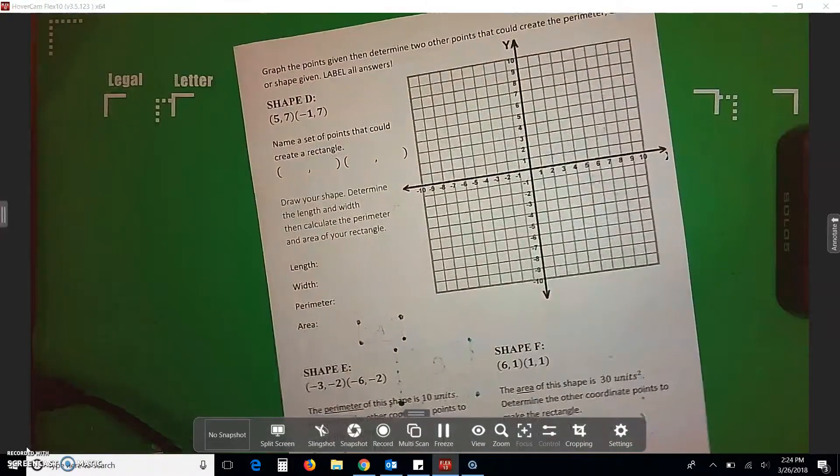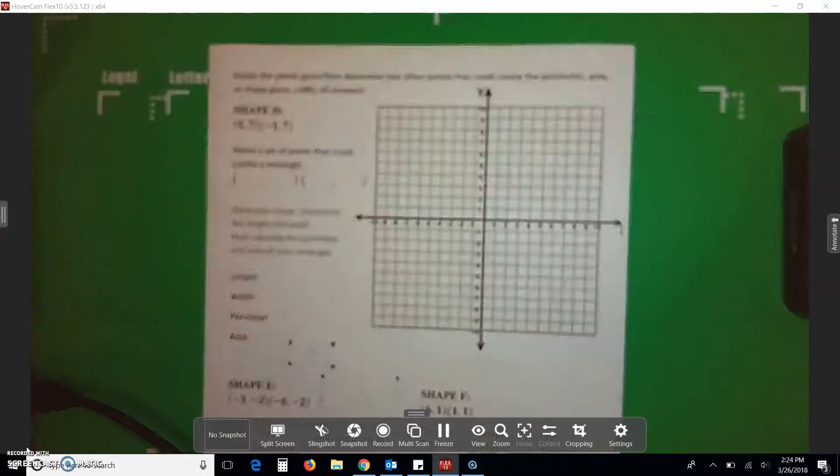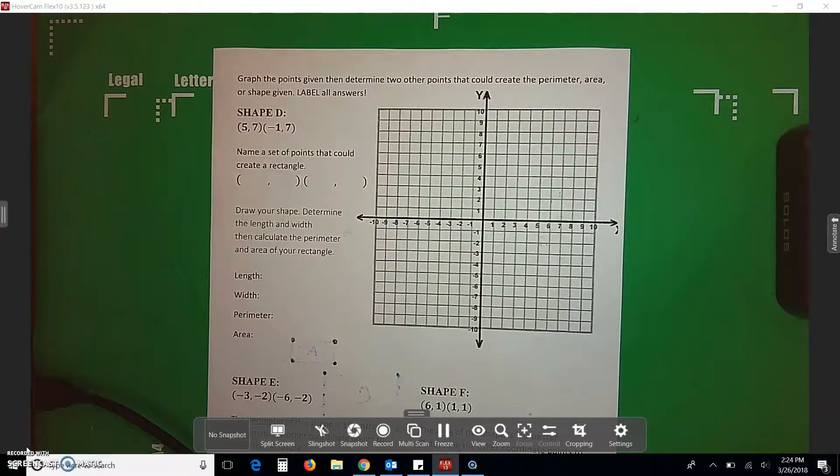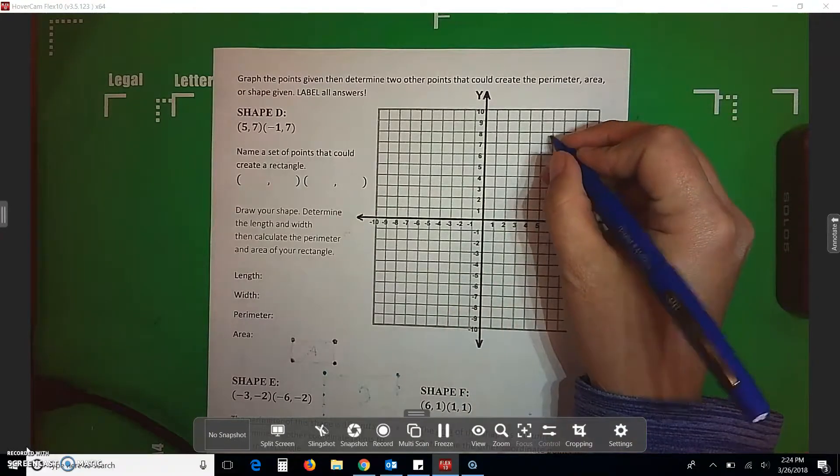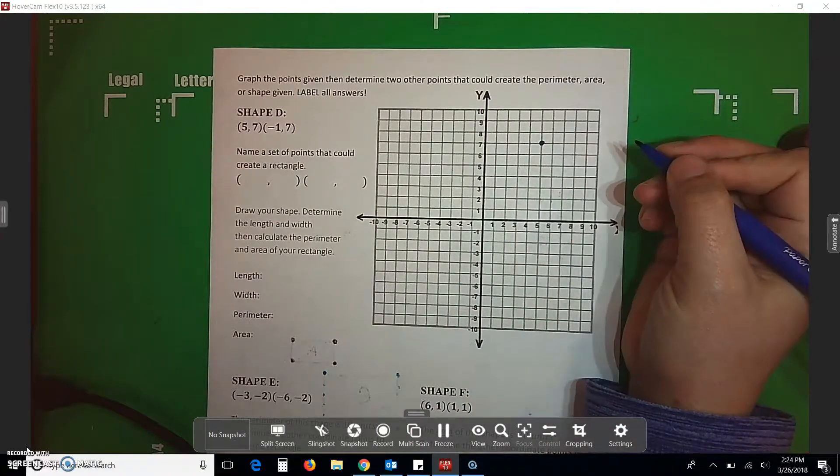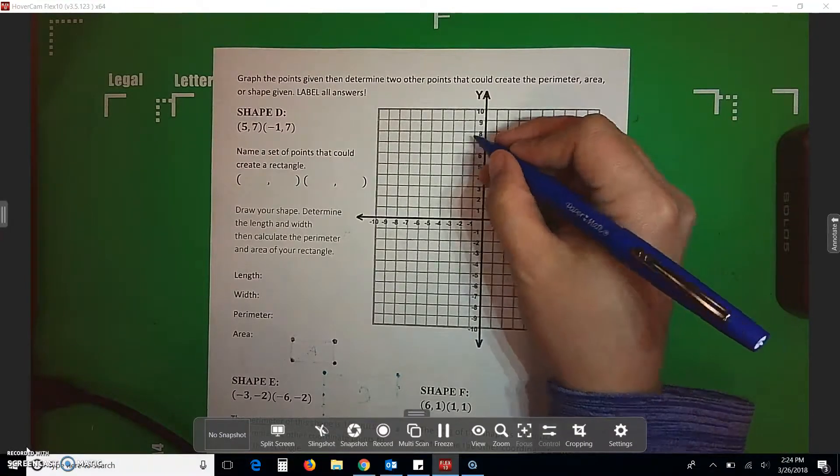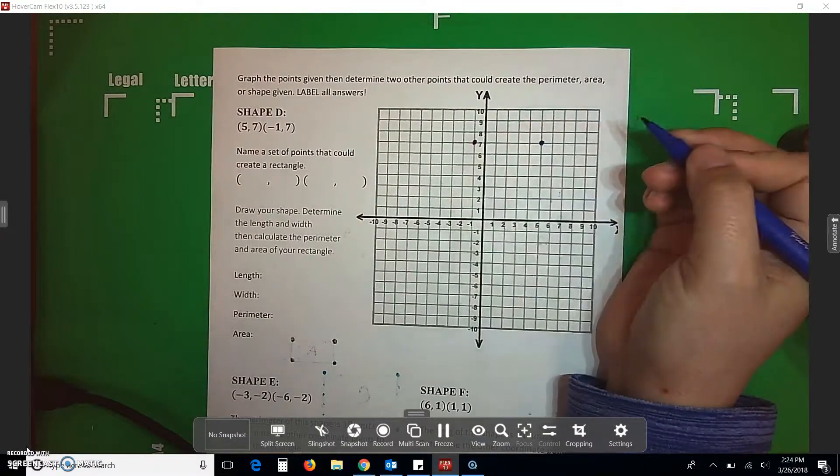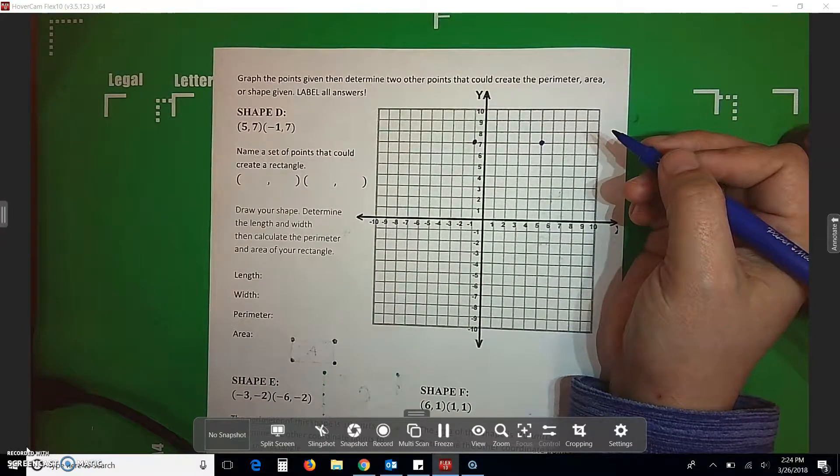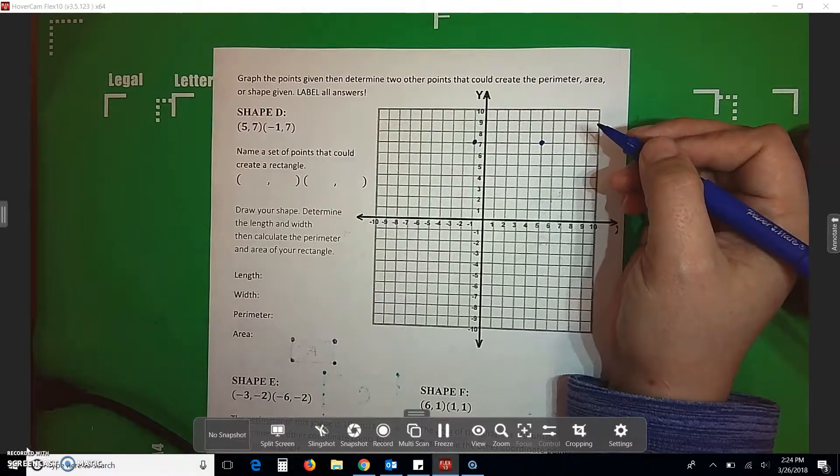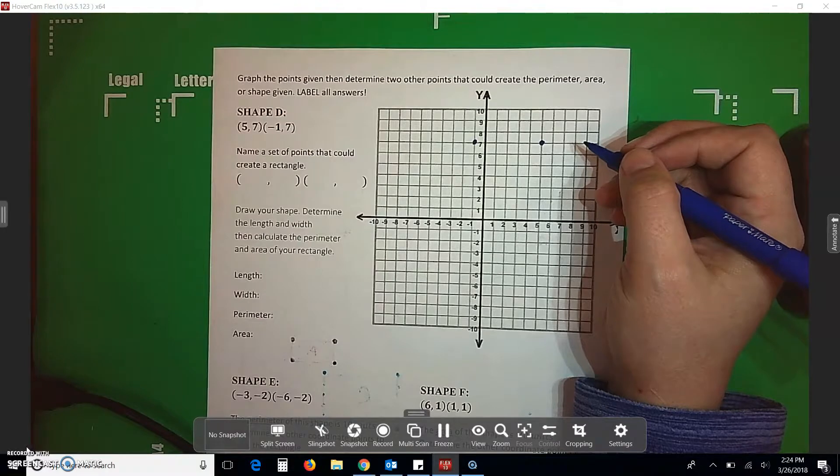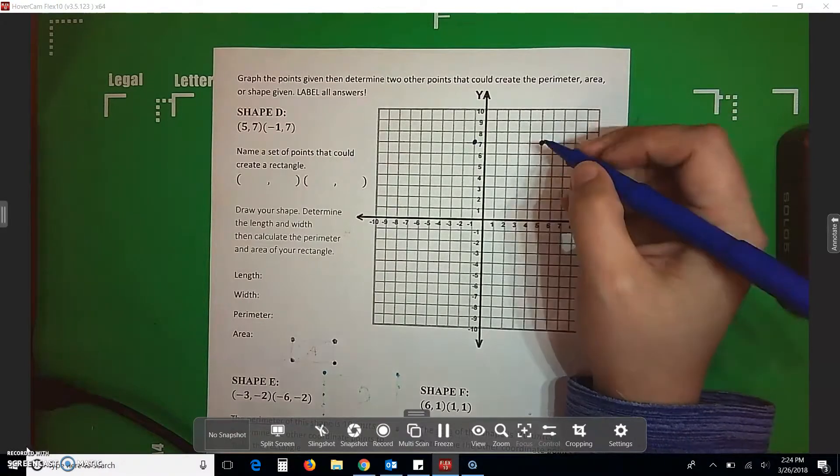Going on to the back. It says, graph the points given, then determine two other points that could create the perimeter area or shape that it wants you to make. Label your answers. So, we're going to start with shape D where it says to go 5, 7. So, over 5, up 7 is my first point. Negative 1, positive 7. That's my second point. It wants a set of points that could create a rectangle. Now, these can really go anywhere I want them to go. As long as I make a rectangle. So, what I'm going to do is I'm going to say, okay, I want to drop 2 here.